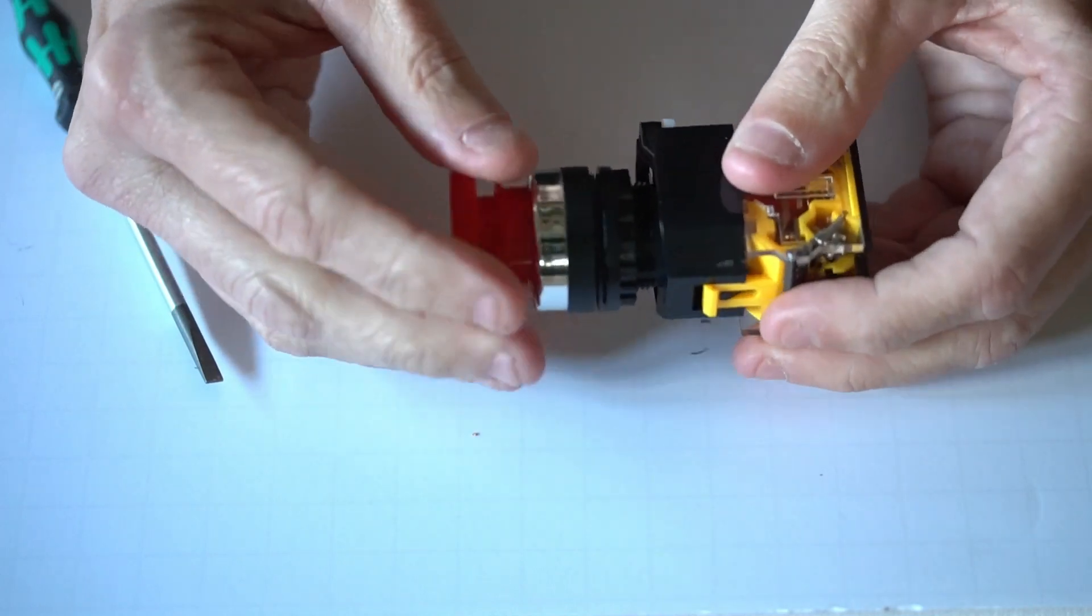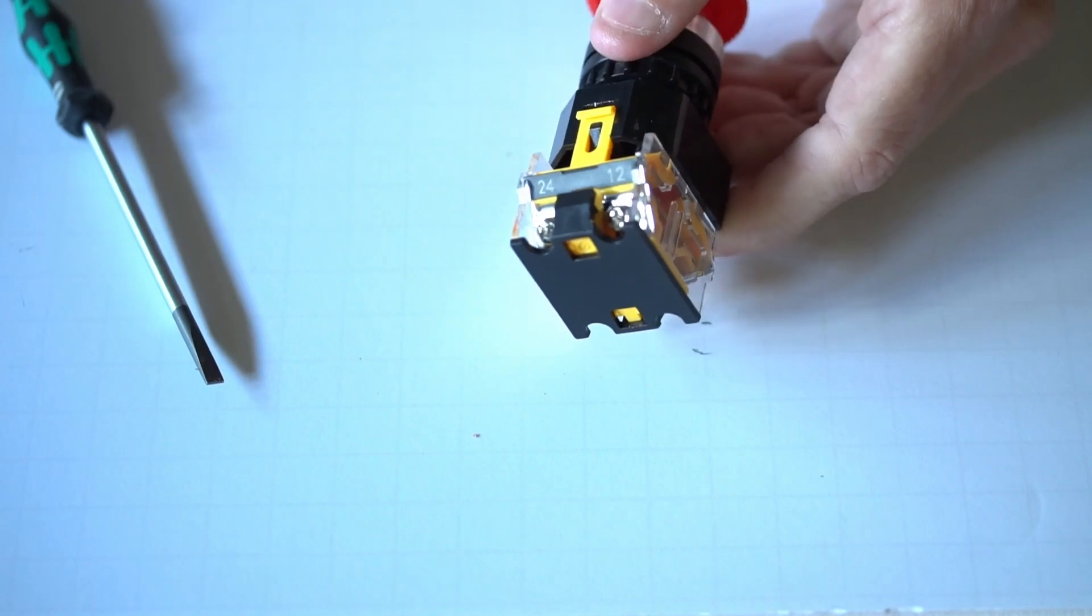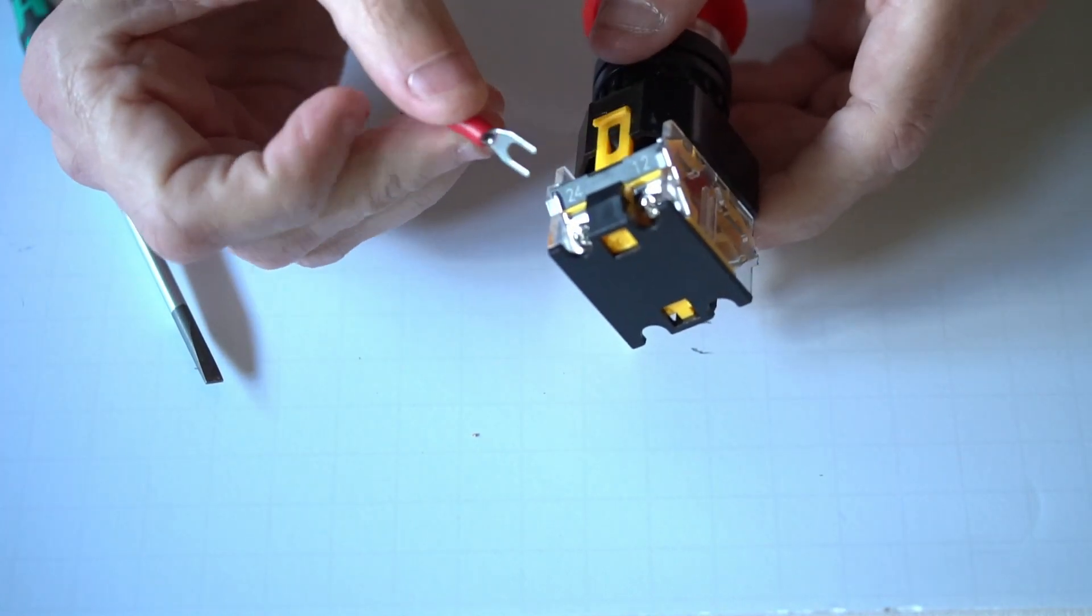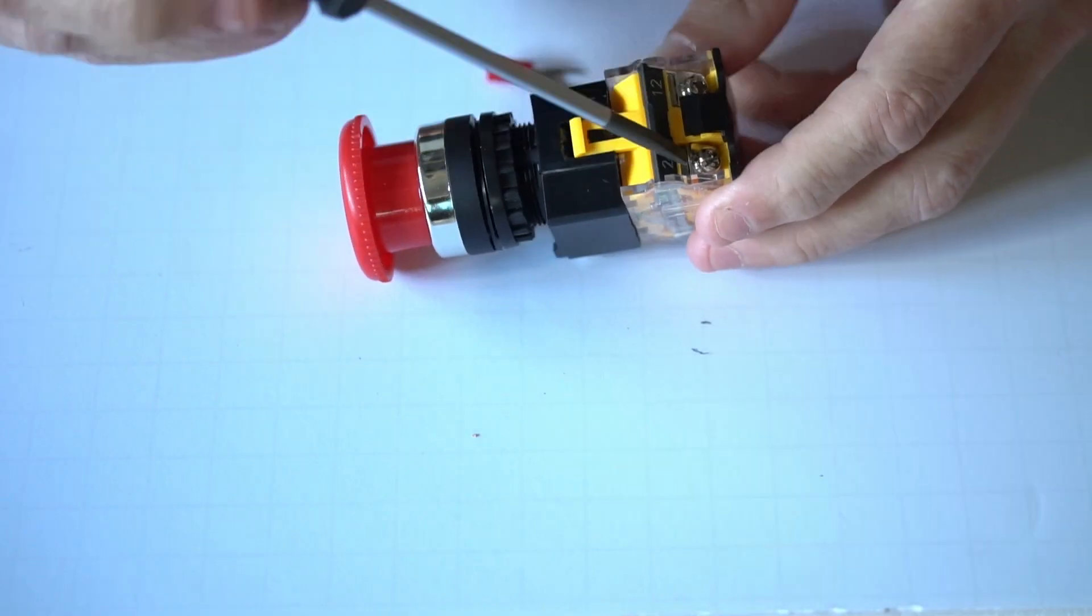The terminals on the bottom use standard spade type terminals or you can use ring terminals or you can just put the wire directly in underneath the plate that's underneath the screw.